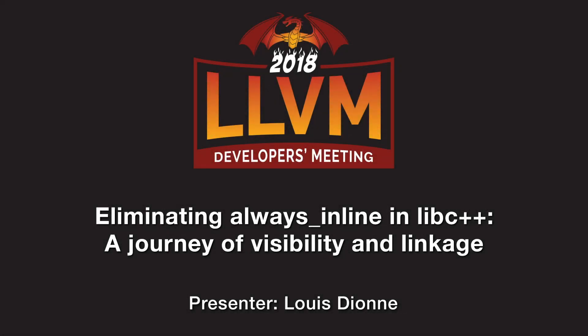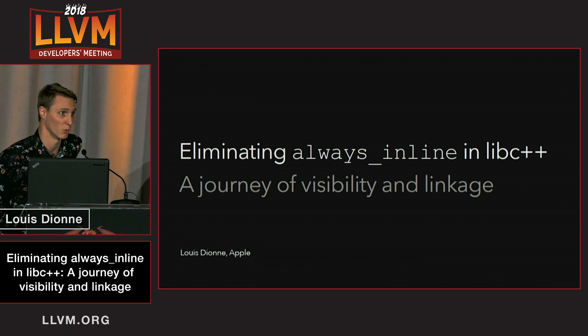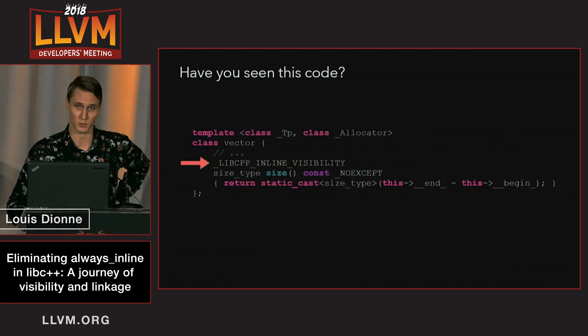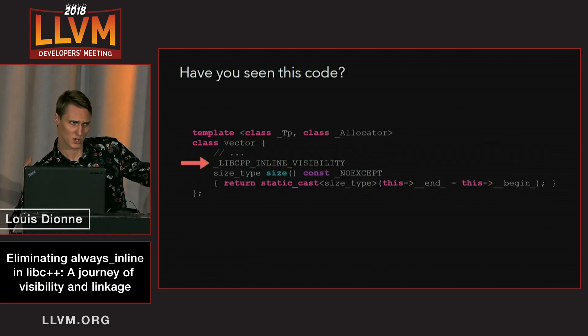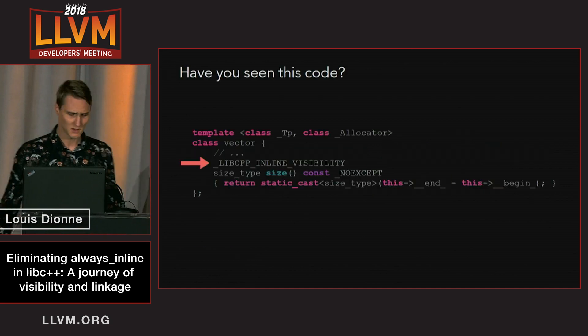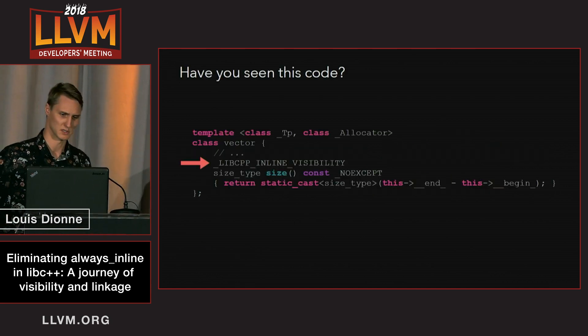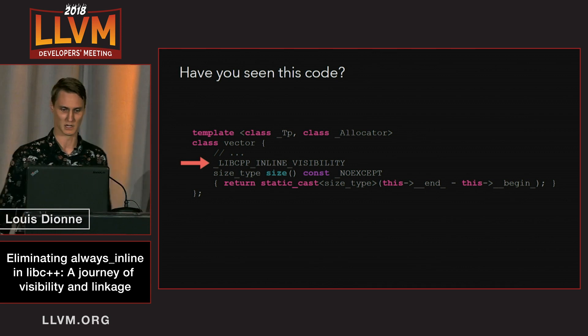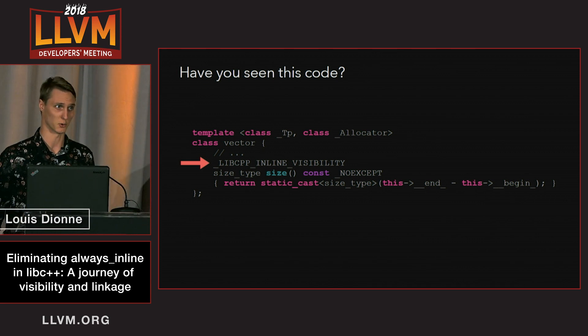Hi folks, I'm Louis Dion. I work at Apple on libc++ and I want to talk about something horrible called always_inline. Some of you might have seen this code before. Specifically, I'm talking about the _LIBCPP_INLINE_VISIBILITY macro.